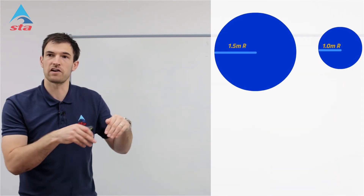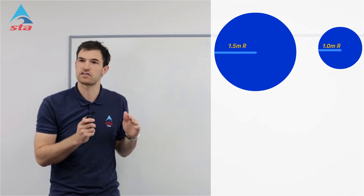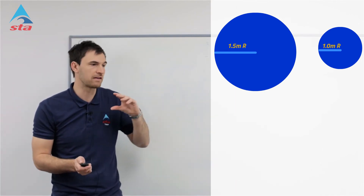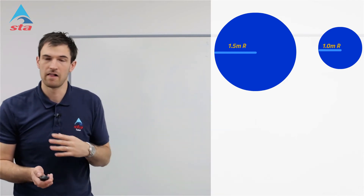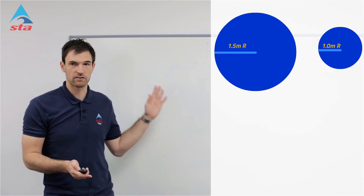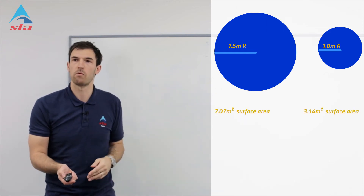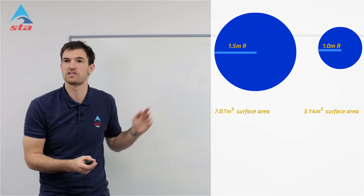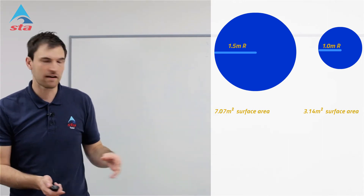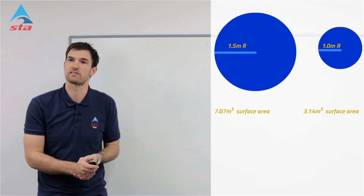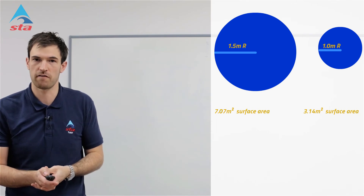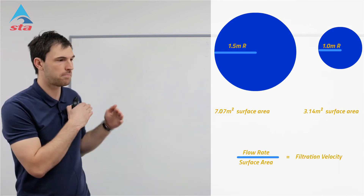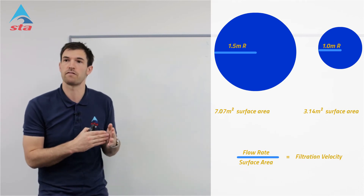If you look downwards on top of your filter it's going to be in a circle shape, and we have to work out the surface area of that filter to start with. On most conventional filters this will be indicated on the side or in the manufacturer's guidance document, but if you want to work it out it's a simple method: area of a circle is π r². We've got two filters here for comparison. Filter one has a 1.5 metre radius: π × 1.5 × 1.5 gives us 7.07 m² surface area. Filter two, slightly smaller, has a 1 metre radius, giving us a 3.14 m² surface area. The flow rate delivered from the circulation pumps divided by the surface area of the filter gives you the filtration velocity — the downward speed through that filter.